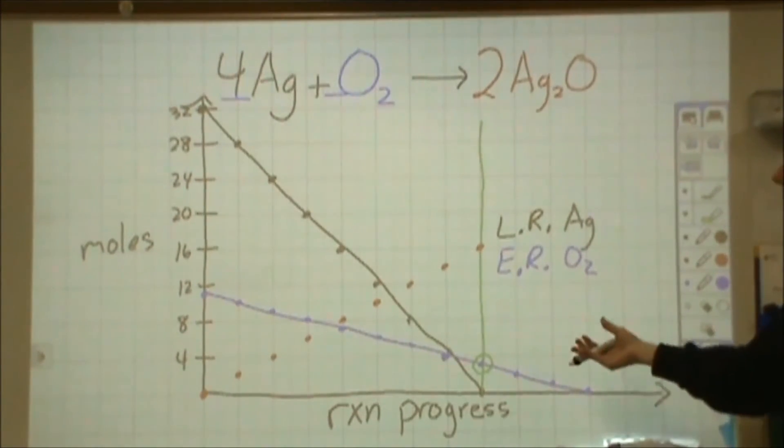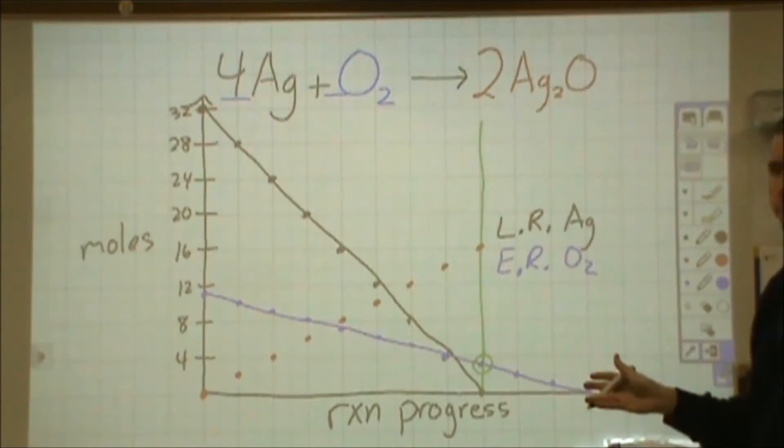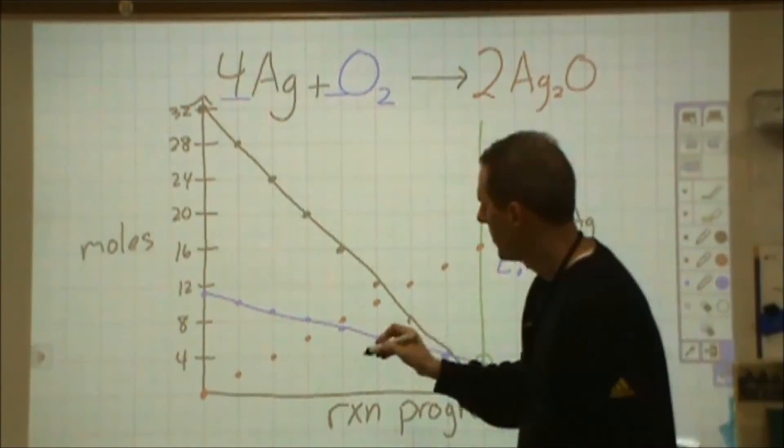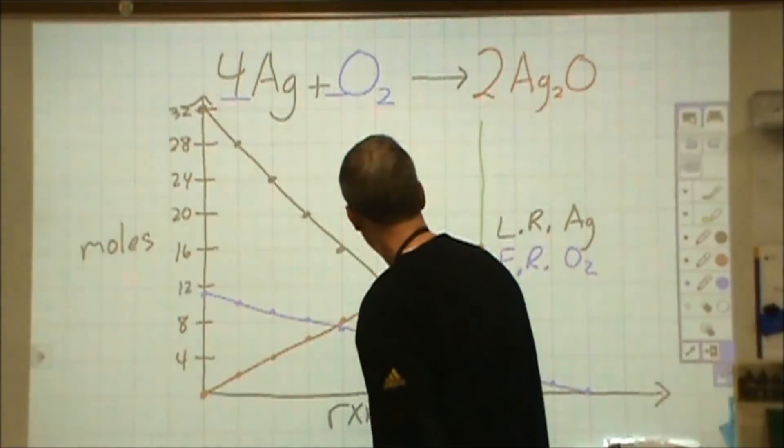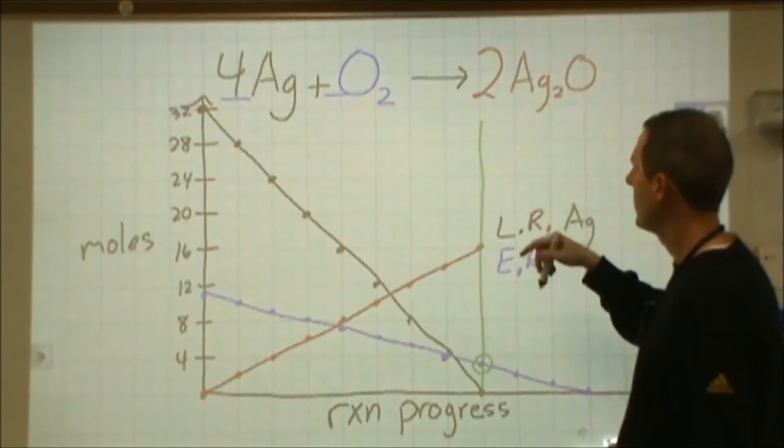At that point, we've run out of silver metal. There's no way we can make any more silver oxide in our reaction zone. So if we look at this particular point, we would find that we've made sixteen moles of product of silver oxide.